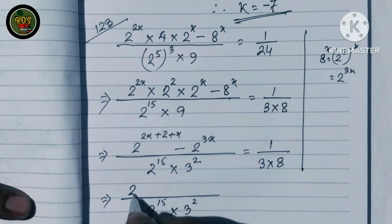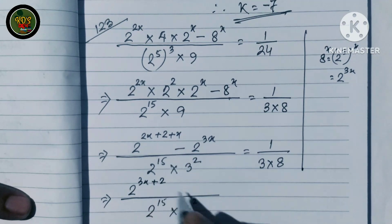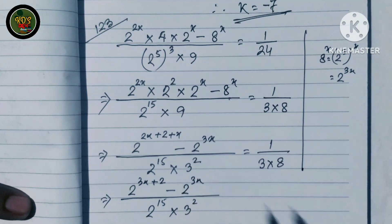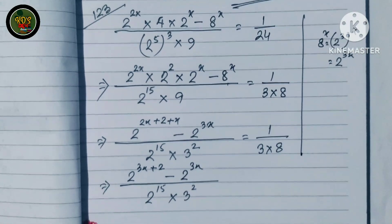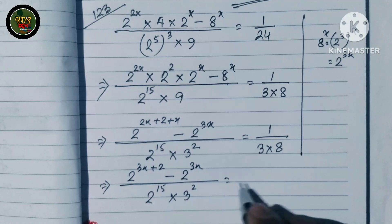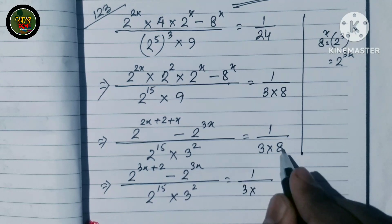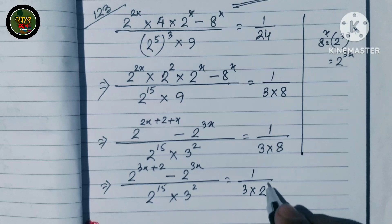2 to the power 3x plus 2 minus 2 to the power 3x equals 1 by 3 into 8 to the power 3 cube.